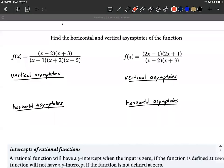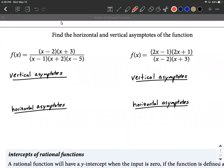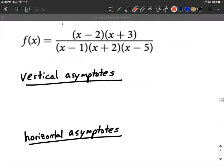A couple quick examples where we're trying to find the horizontal and vertical asymptotes of some rational functions. So let's jump right in here. We have f of x. It's all factored for us.